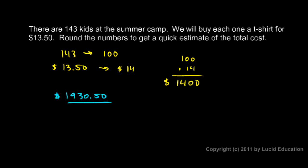And you can see that this is a case where we would not want to round to get a quick estimate. If you order 143 t-shirts, and they're $13.50 each, and you show up with $1,400 to pay for them, they're not going to give you the t-shirts. They're going to want the actual cost.